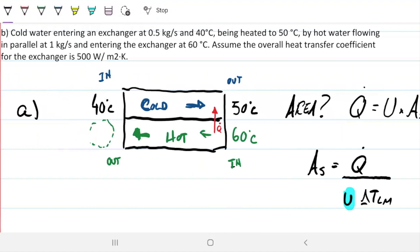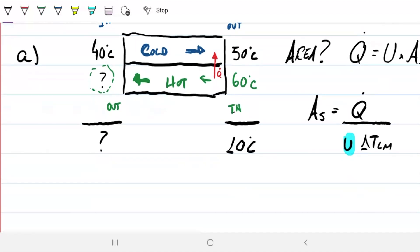To determine delta T log mean, I need to find the delta T's. On the right side, that's quite easy because that will be 10, right? 60 minus 50, that's 10°C difference. On this side, however, I can't do it yet because I don't know the output temperature, so that's what I need to find.